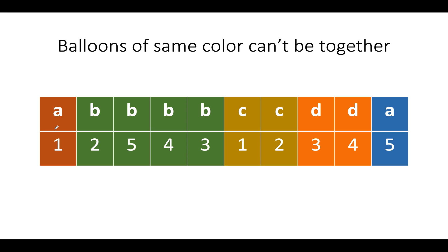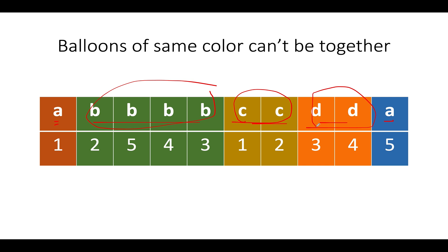Let's focus on one example — I've taken a slightly longer one so you get a good hold of the underlying concept. There are balloons of five different colors: dark orange, green, yellow, light orange, and blue. The constraint says no two balloons of the same color can be together. So out of a slot of four same-color balloons, we'll have to remove three. The key insight is: remove the one that takes the least amount of time, because we want the minimum total removal time.